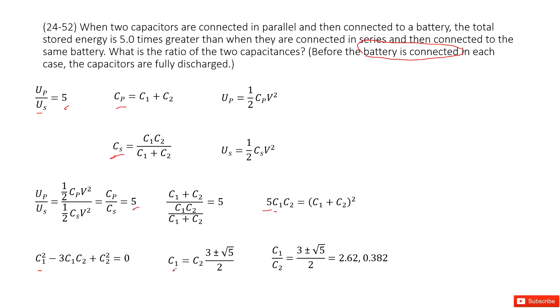You get the function for C1 in terms of C2, right? It looks like this one. And then you can get the ratio C1 over C2 equals this term. And then you can just simplify it equals two numbers. Thank you.